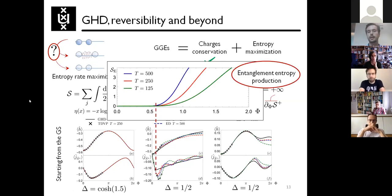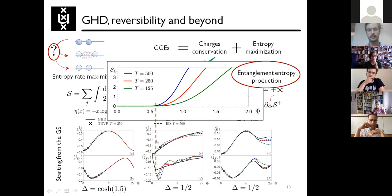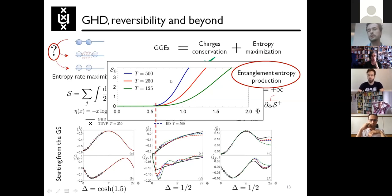If you look at the entanglement entropy of the system — the Rényi entanglement of a half chain — you see this behavior. Before the flux value where the Fermi sea first touches the boundary, we are still in the usual GHD regime with no entropy production, and the entropy is flat. Then suddenly, when you hit this boundary, the entanglement starts growing, because as soon as the Yang-Yang entropy is no longer zero, you can accommodate a large entanglement over half the chain. This entropy growth is a direct signature that you are actually producing entropy.